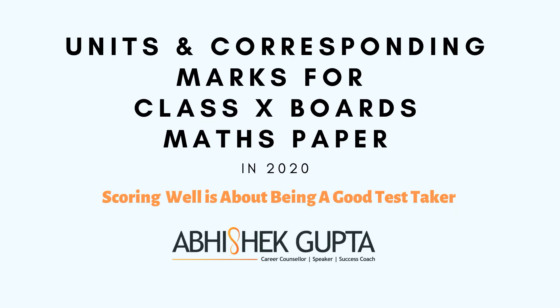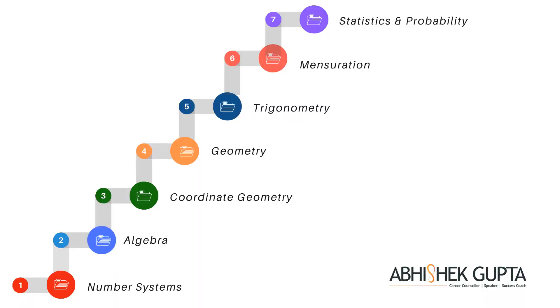Now let us focus on the syllabus of your mathematics paper. Your maths paper comes out of seven units — number systems, algebra, statistics and probability, coordinate geometry, geometry, trigonometry, and mensuration. CBSE does specify how many marks will be tested from each unit, so we really need to play well with that so we can focus on getting maximum marks out of minimum effort.